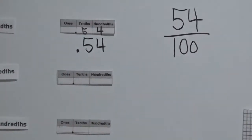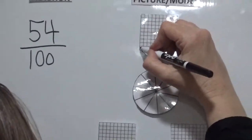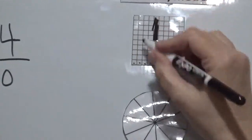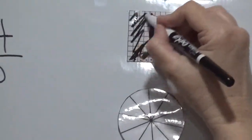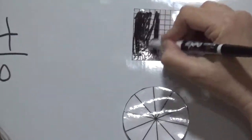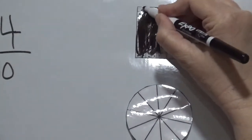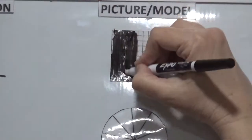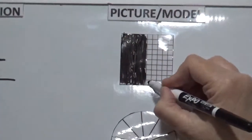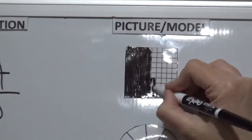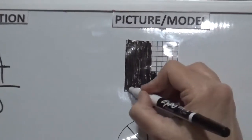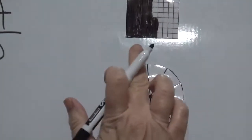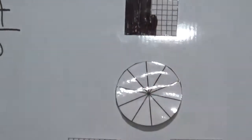For the picture model, you count and shade in fifty-four squares. So all of five columns and four additional squares would be shaded in — that's fifty-four pennies out of a hundred pennies, or five dimes and four pennies.